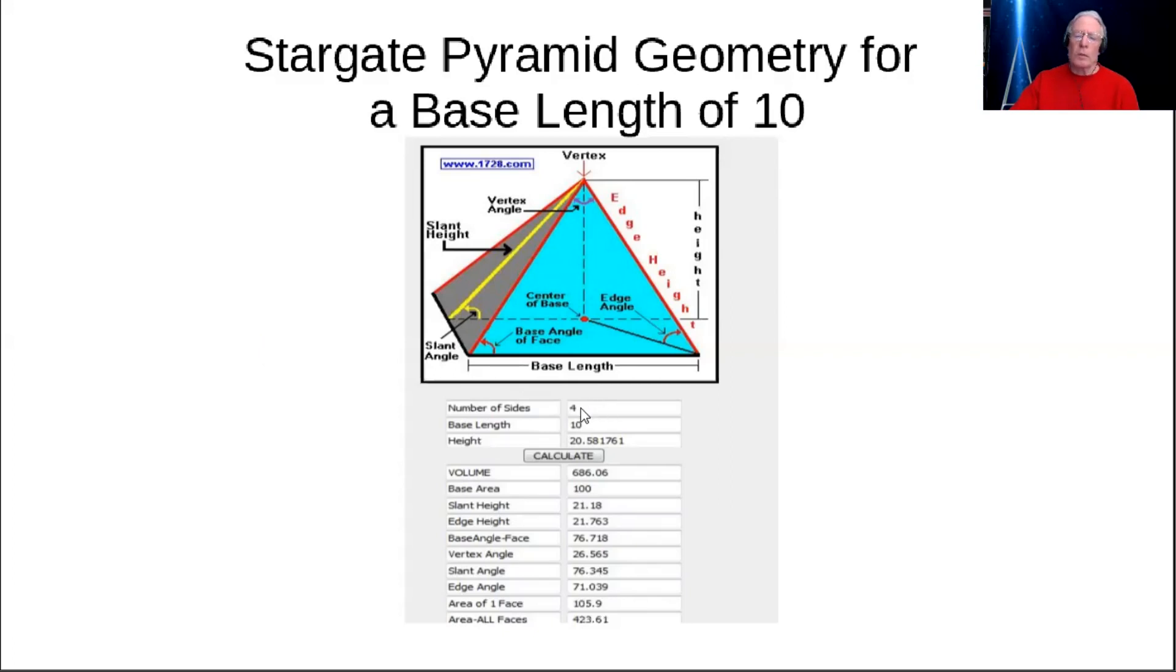When you go to this link, you can use these dimensions to come up with the 76.345 degree slant angle. You'll put in an input of four. I'm using a simplistic base length here of 10 to show you how you determine the height to base length ratio.